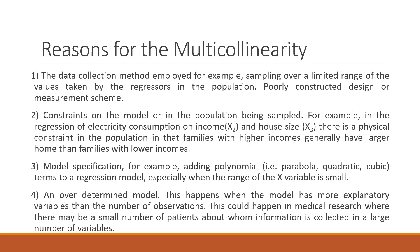Third, model specification — for example, adding polynomial terms to the regression model, especially when the range of the x variable is small. Fourth, an over-determined model: this happens when the model has more explanatory variables than observations — an over-parameterized model. This could happen in medical research where there may be a small number of patients about whom information is collected on a large number of variables.